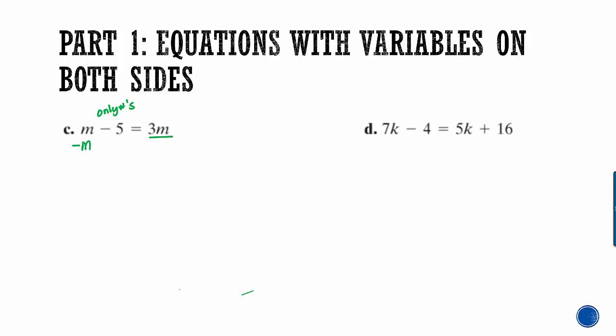So let's move this m. Because it's just a positive m, I'm going to subtract it. And that leaves me negative 5 equals 2m. And then we can divide both sides by 2. That crosses off, and we get m equals negative 5 halves. And if you want, you could write it as negative 2.5, but no need to think through that.